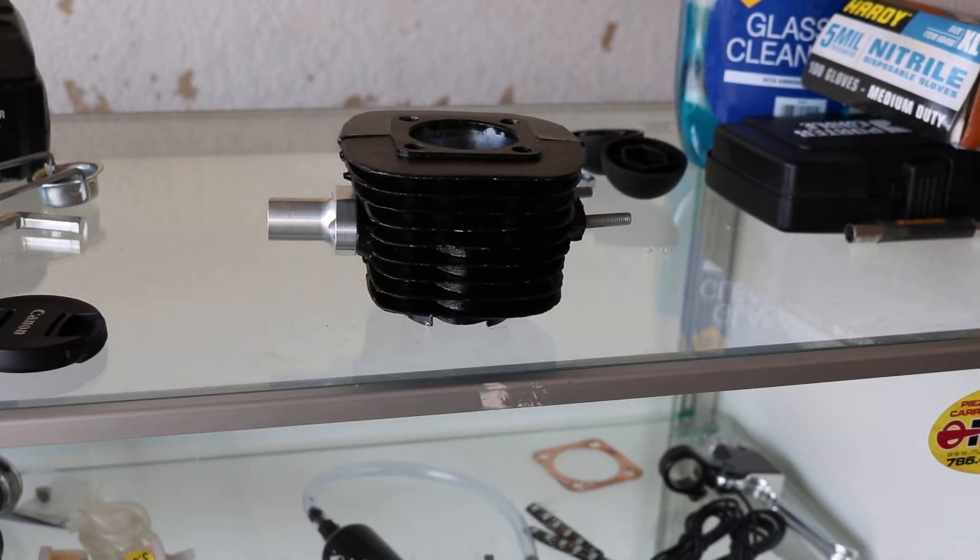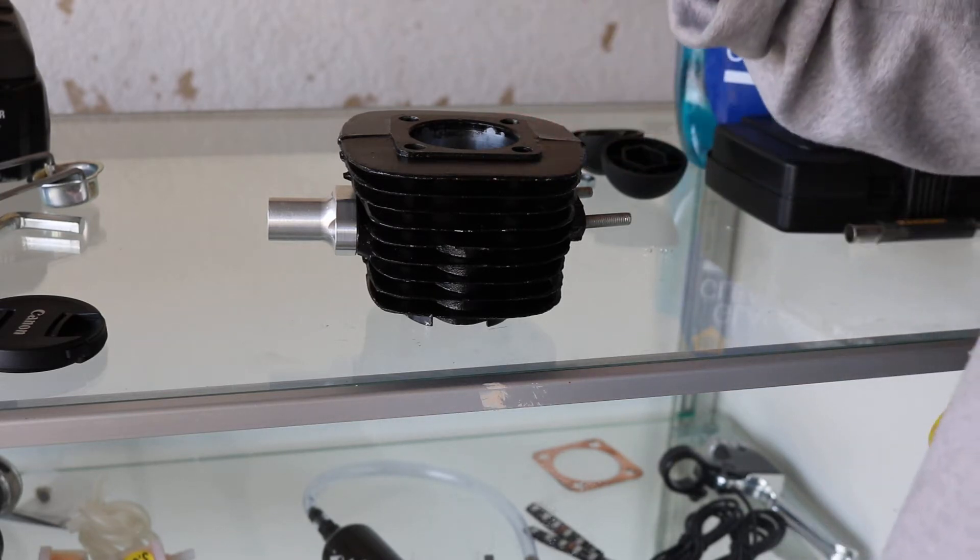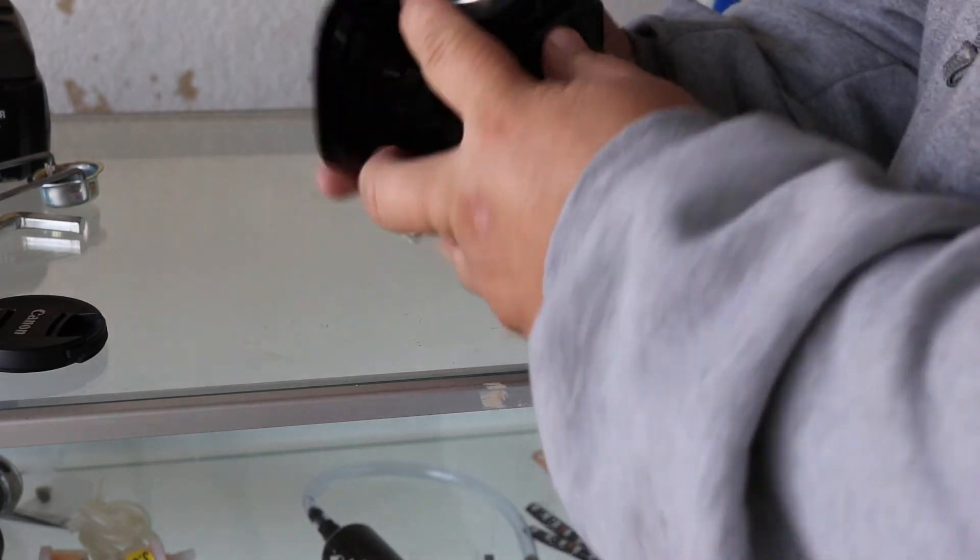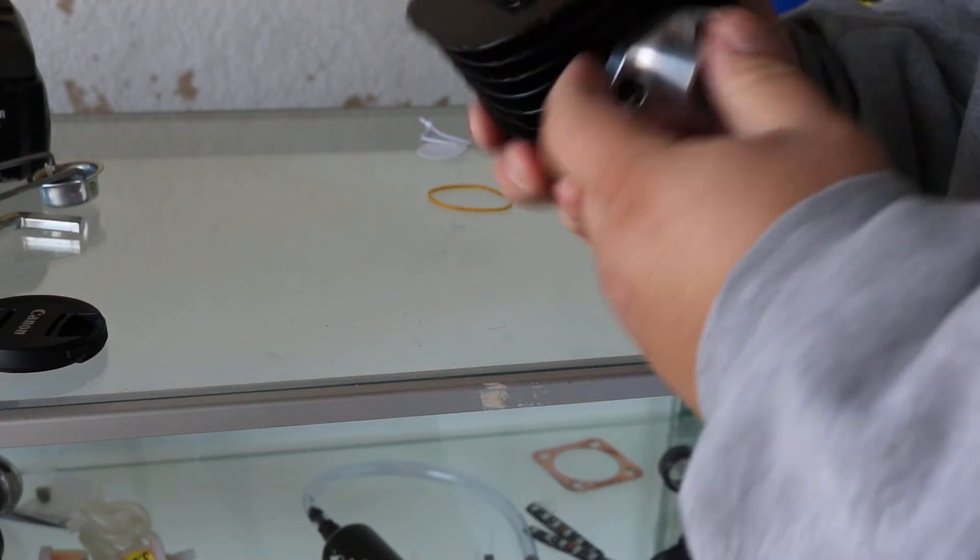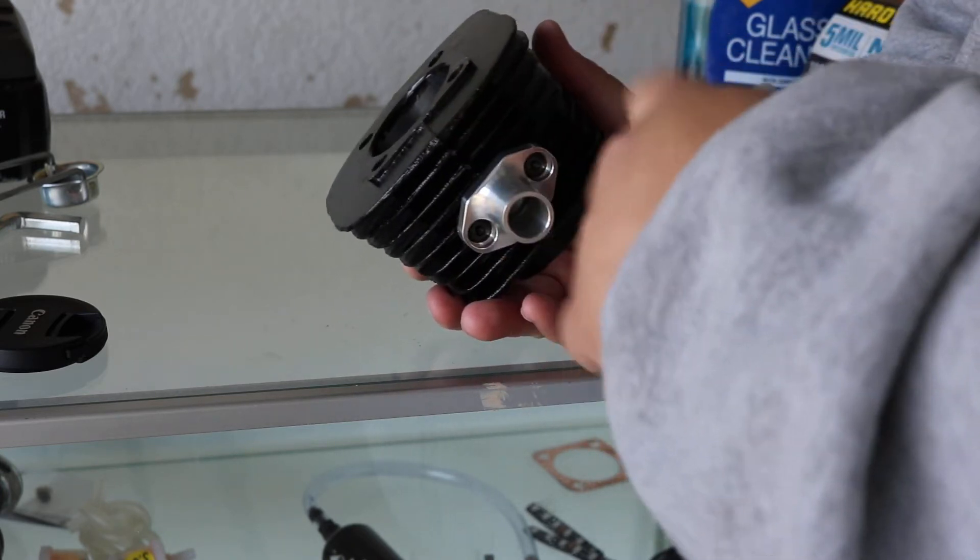Okay guys, this is part two of my port job. At this point I've already installed the aluminum intake, a 15 millimeter aluminum intake. I was able to take the gasket, but the gasket didn't line up.